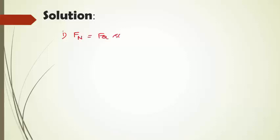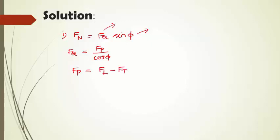To calculate the pressure acting on the side bars, the formula is Fq into sin(phi), where Fq is the thrust in the connecting rod and phi is the angle made by the connecting rod with the axis of the engine. Fq can be calculated as Fp divided by cos(phi). Here, Fp is the piston effect calculated using Fl minus Fi. Since it is a horizontal engine, the weight of the reciprocating parts need not be considered while calculating the piston effect.